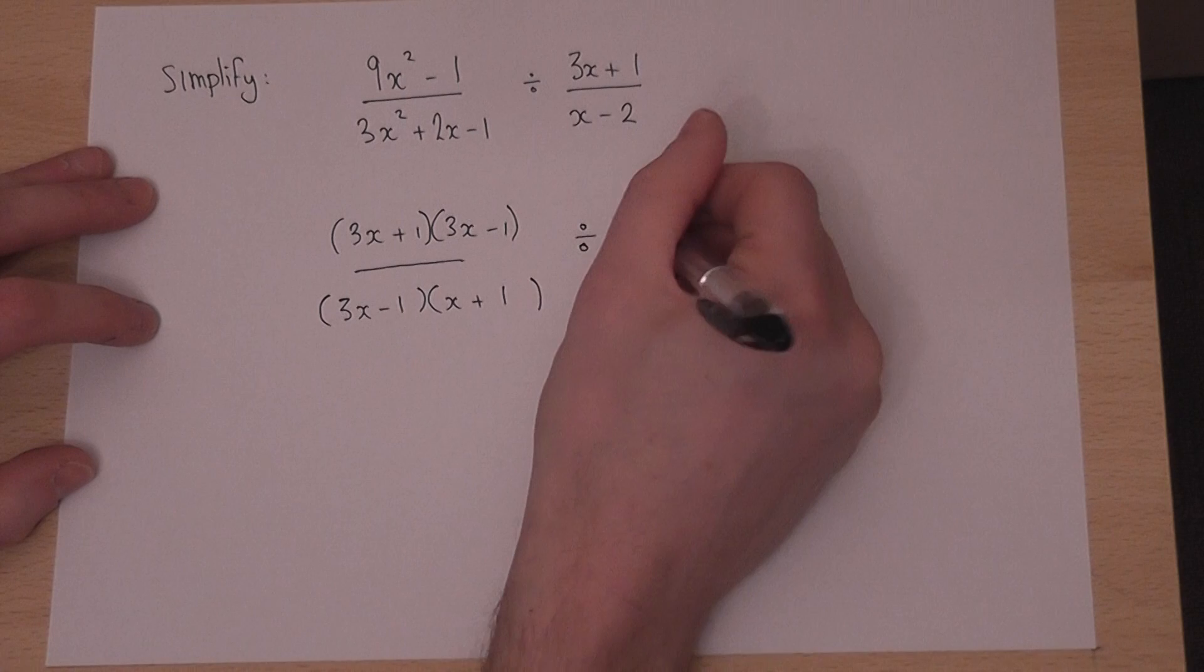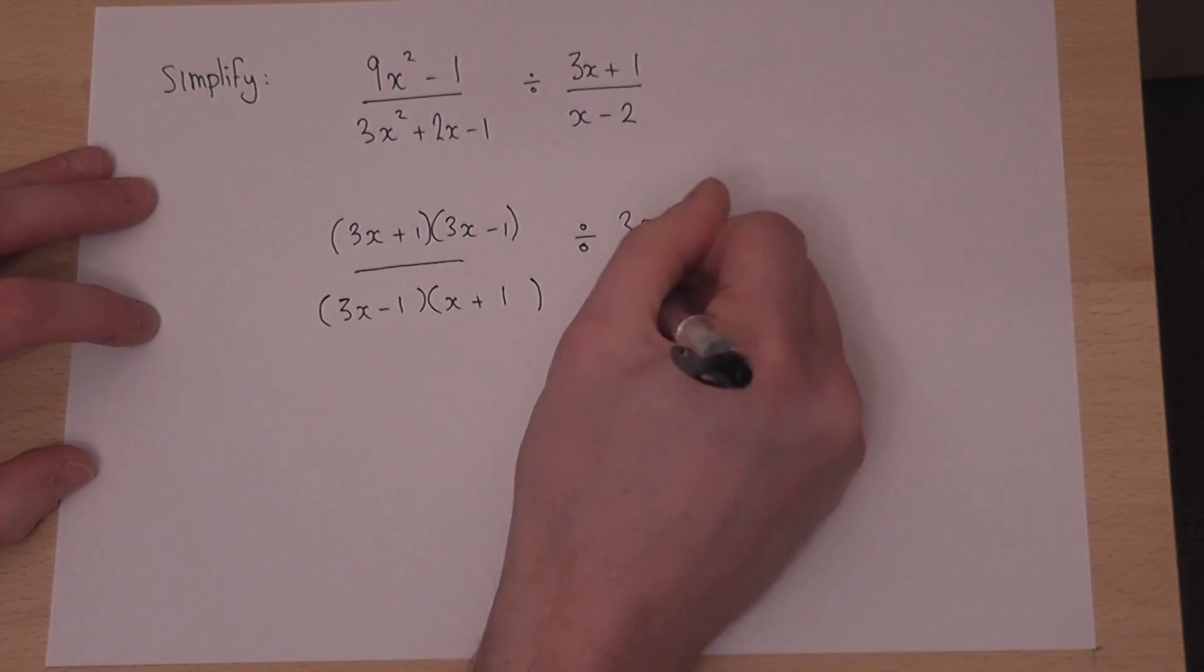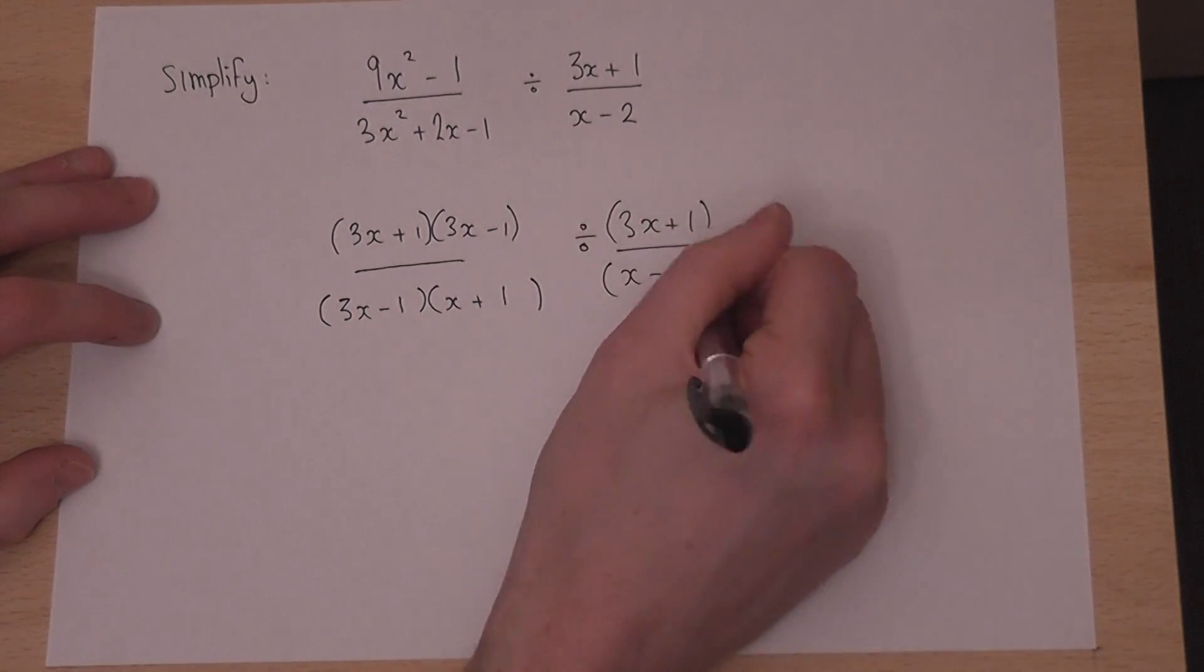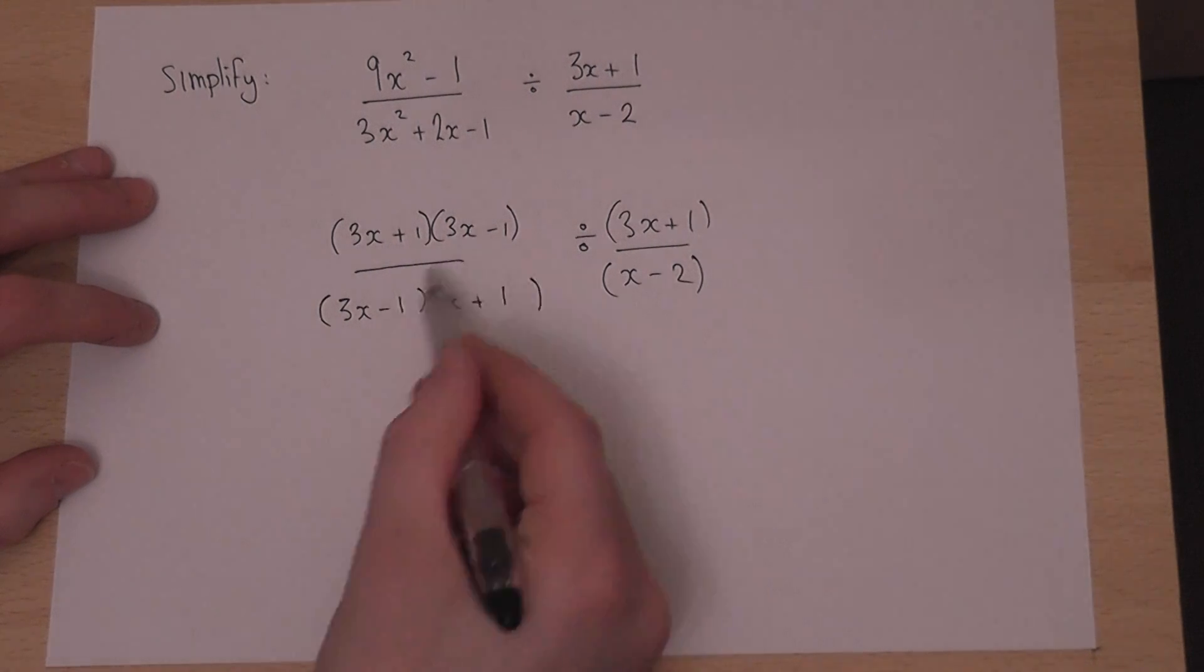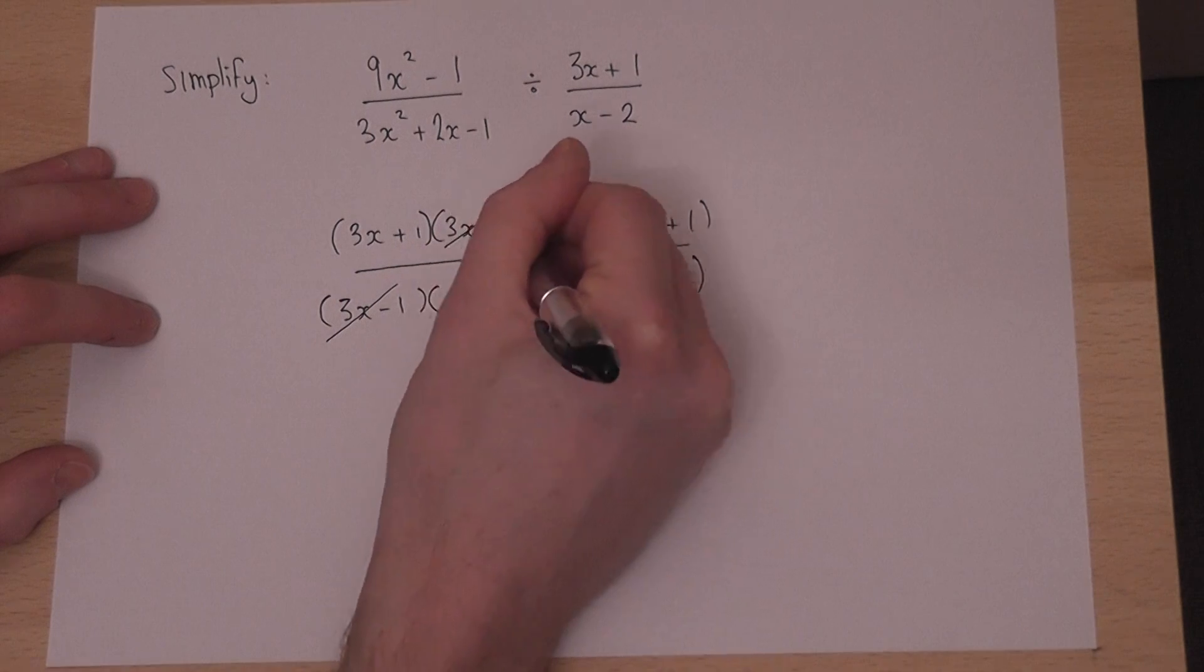And this then gets divided by 3x plus 1 over x minus 2, which I will also place in brackets. Now before I go any further, observe how these two brackets here are the same. So I can cancel off those straight away.